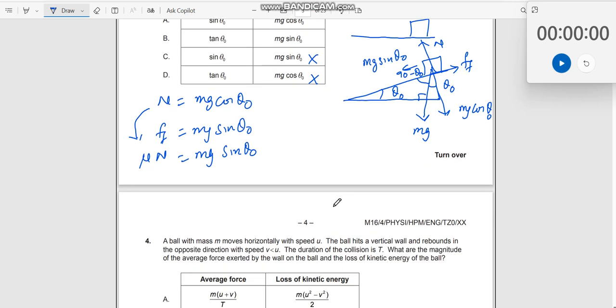So what do you get over here? You will get μ times Mg cos theta 0 is equal to Mg sin theta 0. So Mg and Mg goes away on both sides. So you get μ is equal to tan theta 0. How do you get tan theta 0? Pull this cos theta downwards. If you want, I can show it to you by another step over here.